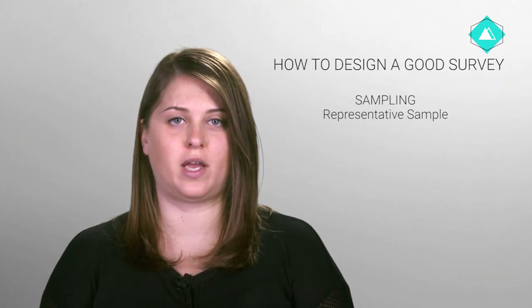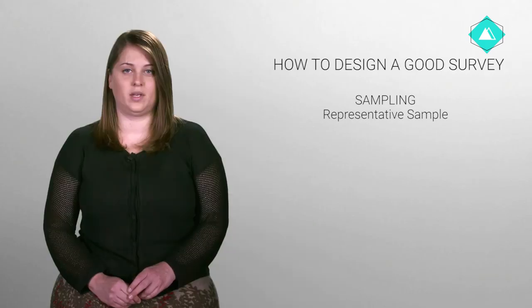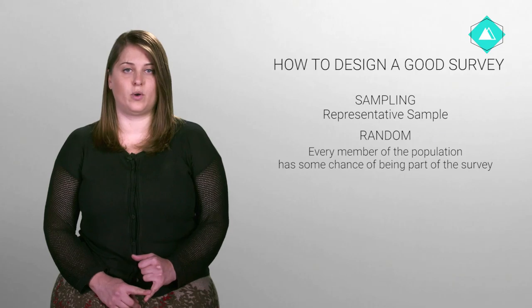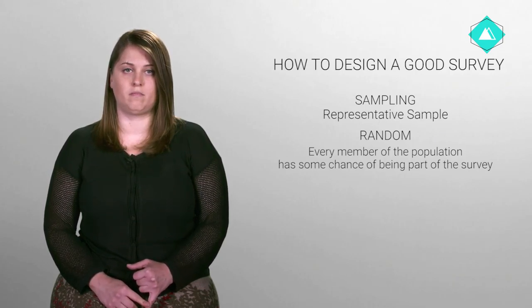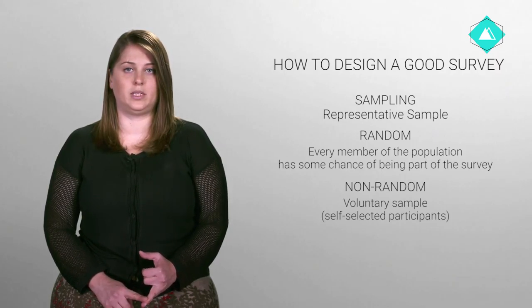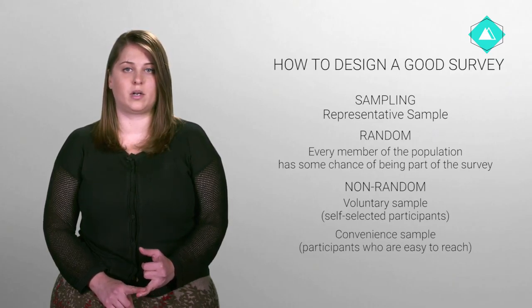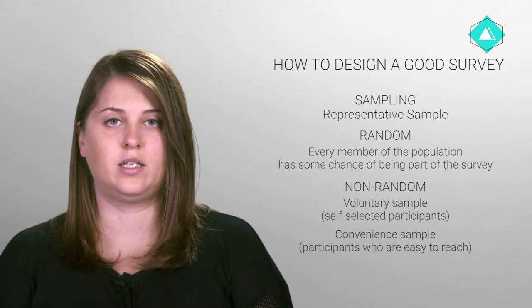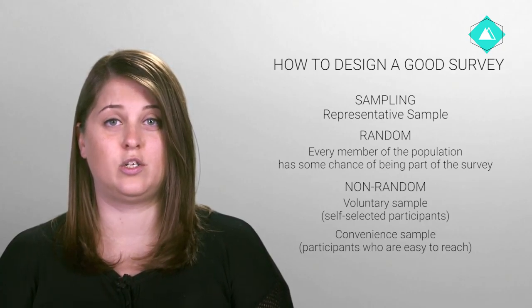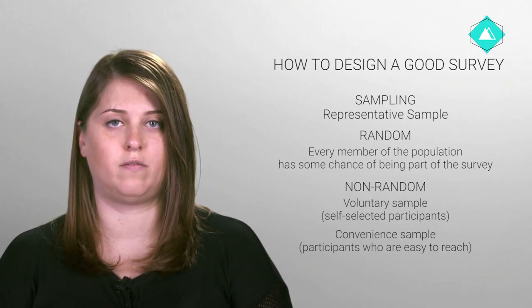There are two methods of getting a representative sample. Random samples, meaning that in a given population every person has the chance of being part of the survey. And non-random — for example, a voluntary sample where participants choose to take part, or a convenient sample where participants are the ones who are easy to reach for some reason or another. Unless you are doing comprehensive and time-intensive research, chances are that you will choose non-random samples. Don't forget to include your sampling methodology in your survey findings.